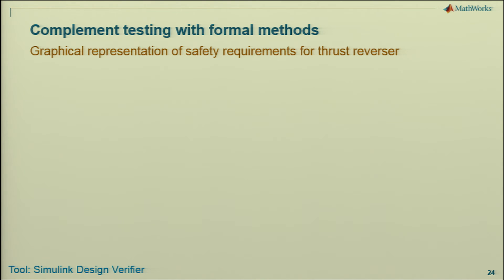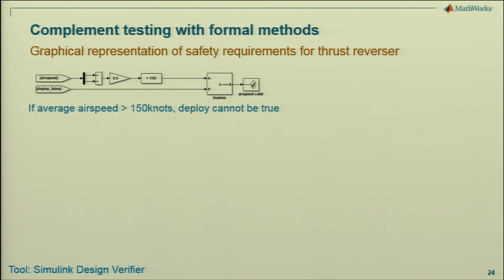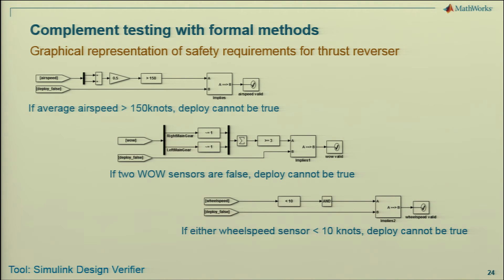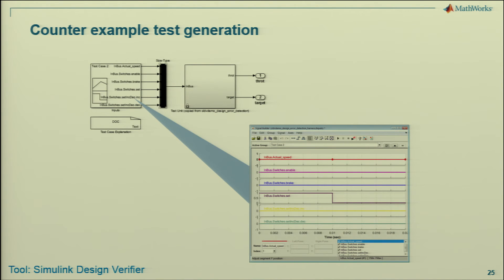For formal methods, some various examples of property proofs where you have some inputs and conditions you're going to be looking for — to show, for instance, that if average speed is greater than 100 knots, then deploy cannot be true for this thrust reverser. Another example of various property proofs you might do on a system, coming from Design Verifier. You can automate this with your test manager through MATLAB Test as well. When one of those property proofs fails, we'll also provide you a counter example showing you the data for when it's failing so you can go back and adjust your design appropriately.